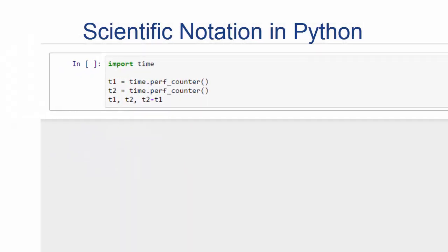Scientific notation in Python. Here we import time, the time module. We set t1 to time.perfcounter. Perfcounter is new in Python 3.3, and that just gets a relative time. t2 is set to time.perfcounter, so that's the relative time after t1 is run.